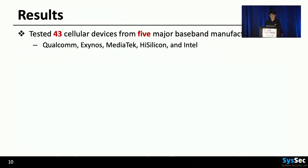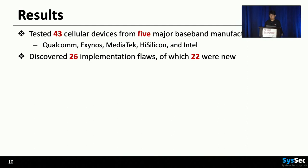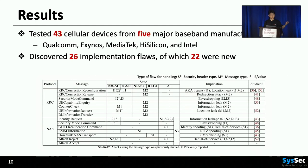Using DoleTest, we tested 43 cellular devices from five major baseband manufacturers: Qualcomm, Exynos, MediaTek, HiSilicon, and Intel. As a result, we found 26 implementation flaws, and 22 were new. We disclosed every implementation flaw to the manufacturers, and most of them have been patched. This is the full results of our experiments, and these vulnerabilities are state-dependent as you can see in the paper.